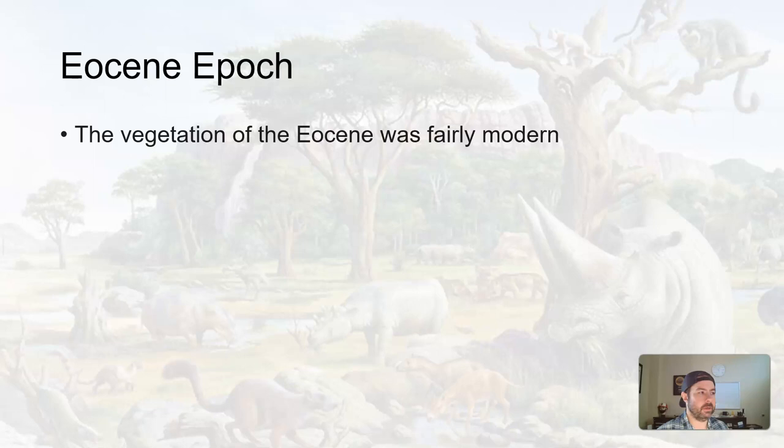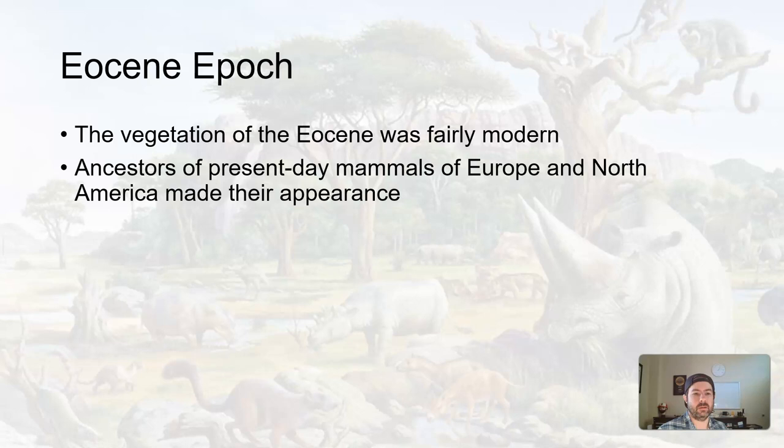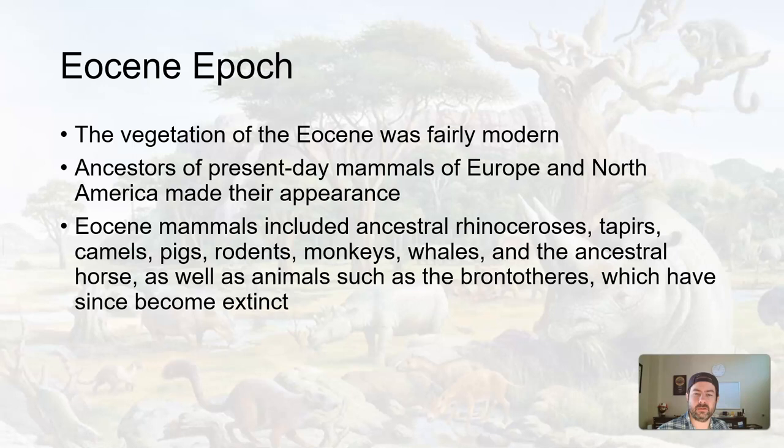Getting into the Eocene epoch — the middle part of the Paleogene period — the vegetation was fairly modern, kind of similar to what we have now, so nothing too groundbreaking. Ancestors of present-day mammals of Europe and North America make their appearance as evolution continues. The Eocene mammals include ancestral rhinos, tapirs, camels, pigs, rodents, monkeys, whales, and the ancestral horse, as well as animals such as the Brontotheres, which have since become extinct.